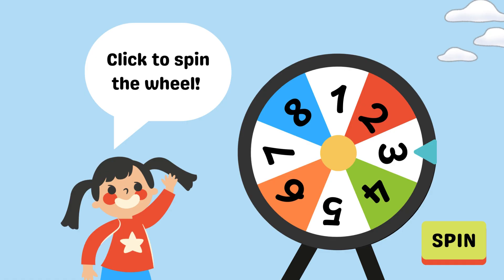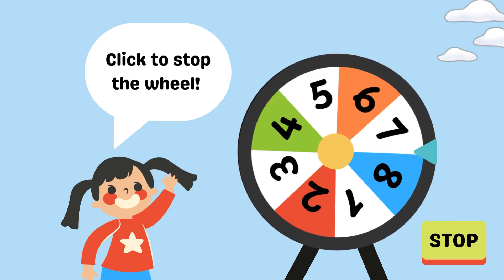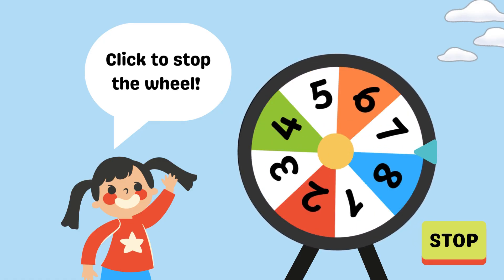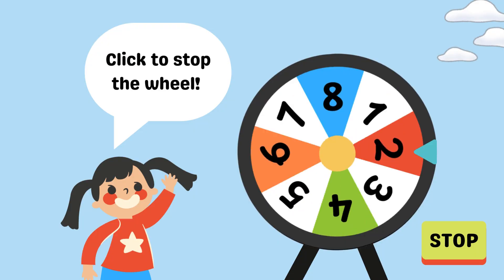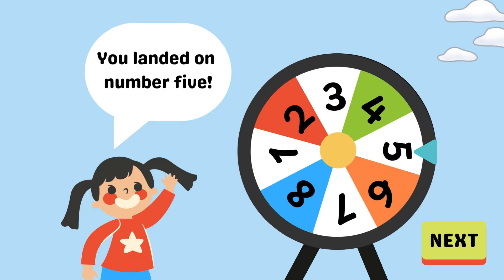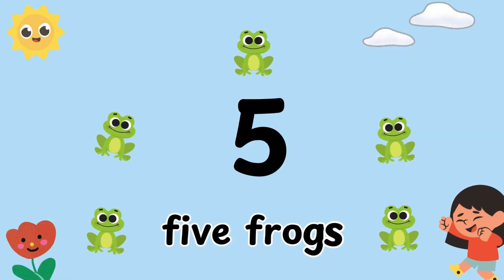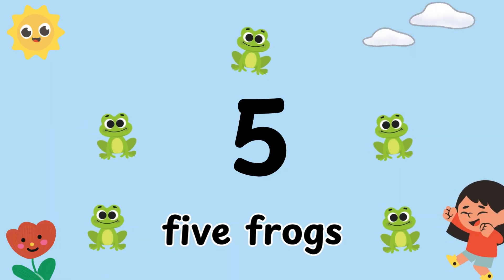Again next, click to spin the wheel. And again, click to stop the wheel. Congratulations! Now you landed on number 5! So let's count the frog here. Example here is 5 frogs.